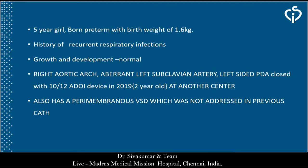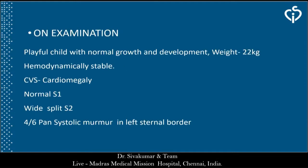She was diagnosed in the neonatal period to have a right aortic arch, aberrant left subclavian artery, and a left-sided PDA. The PDA was closed with a 10-12 ADO-1 device in 2019 when she was two years old at another center. She also has a perimembranous VSD which was not addressed in the previous catheterization.